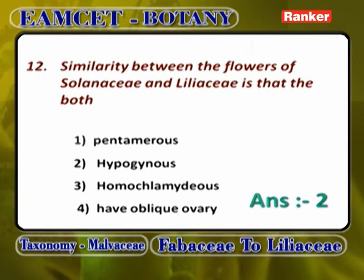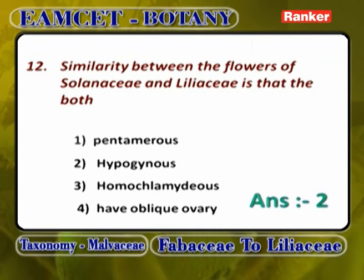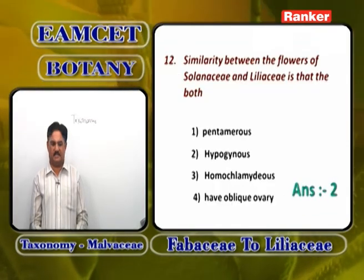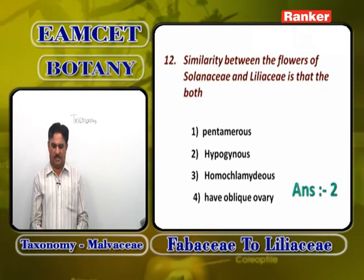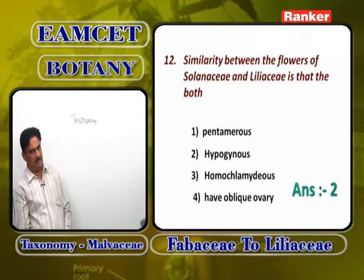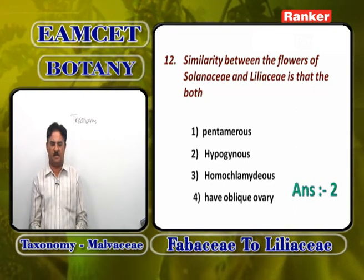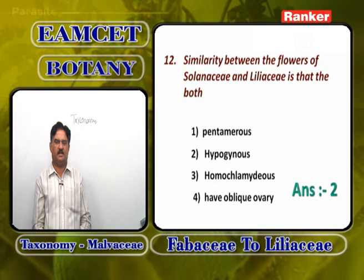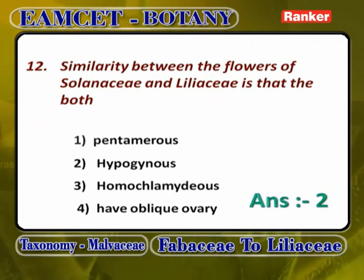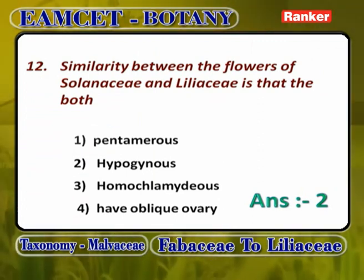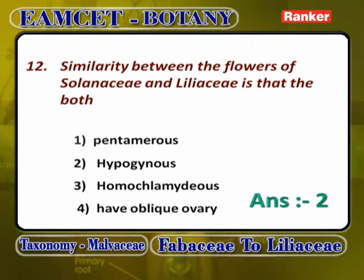Similarity between flowers of Solanaceae and Liliaceae: Pentamerous is wrong — Solanaceae is pentamerous but Liliaceae is trimerous. Homochlamydeous is wrong — Liliaceae is homochlamydeous, Solanaceae is heterochlamydeous. Oblique ovary is present only in Solanaceae, not Liliaceae. The only common character is the hypogynous condition — superior ovary with thalamus slightly bulged and remaining floral parts formed below. Answer is 2.